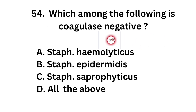Question number 54. Which among the following is coagulase negative? Option A: Staphylococcus haemolyticus. Option B: Staphylococcus epidermidis. Option C: Staphylococcus saprophyticus. Option D: All of the above.